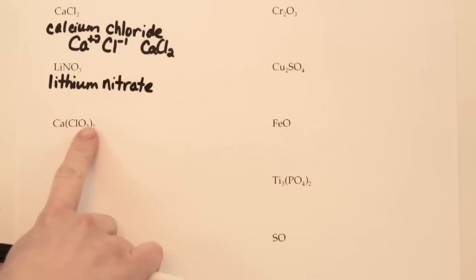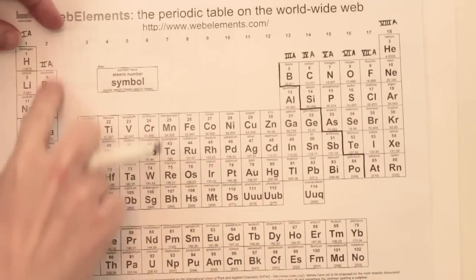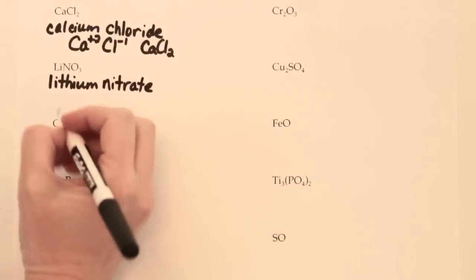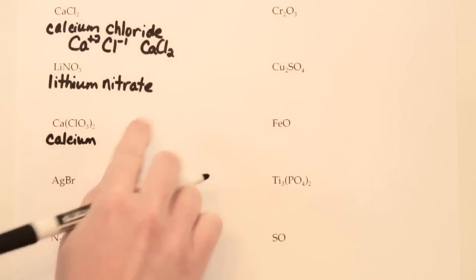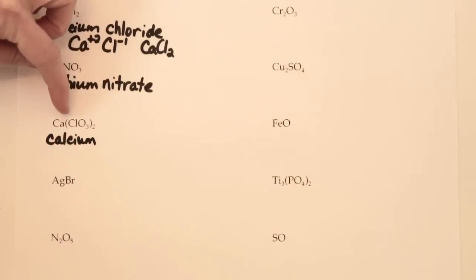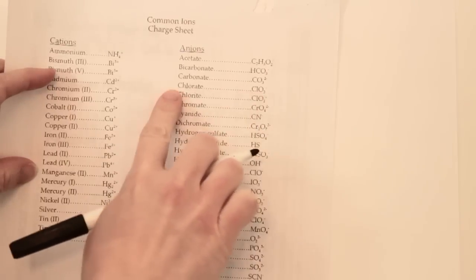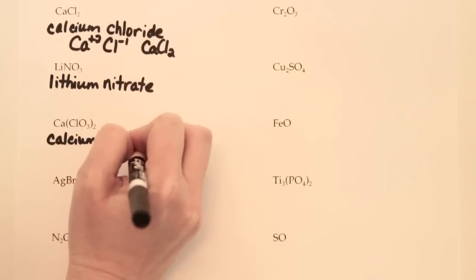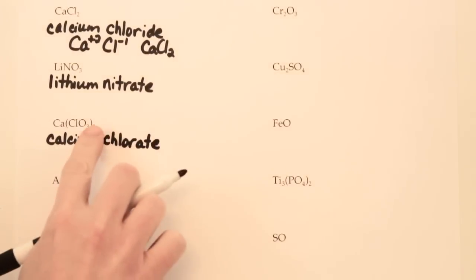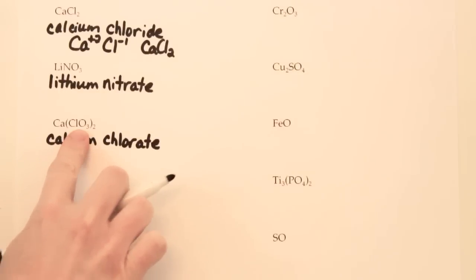Our next one is Ca(ClO₃)₂. We have Ca — calcium is from the second column on the periodic table so we just write calcium. For ClO₃, there's more than one type of element so we find ClO₃ on our charge sheet. ClO₃ is up near the top — the name of that ion is chlorate. Again there's no need to say 'dichlorate.' Someone can tell there are two chlorate ions because calcium is plus 2 and chlorate has a charge of minus 1.